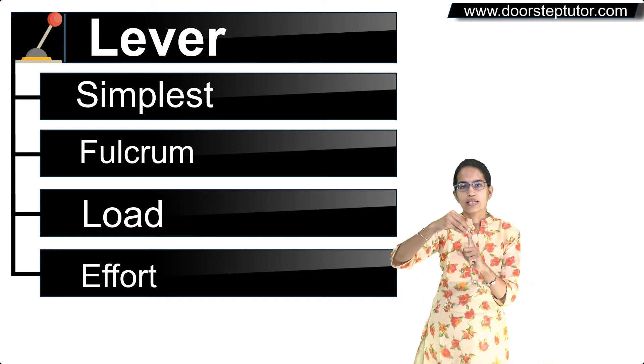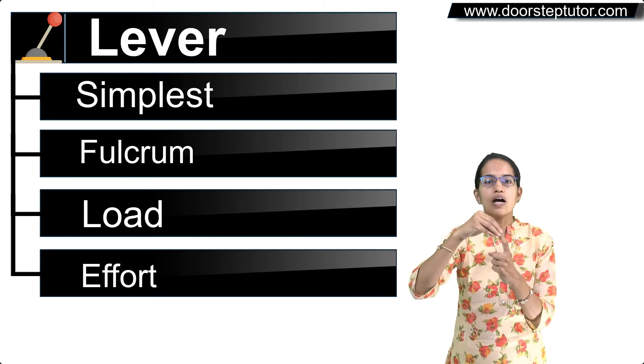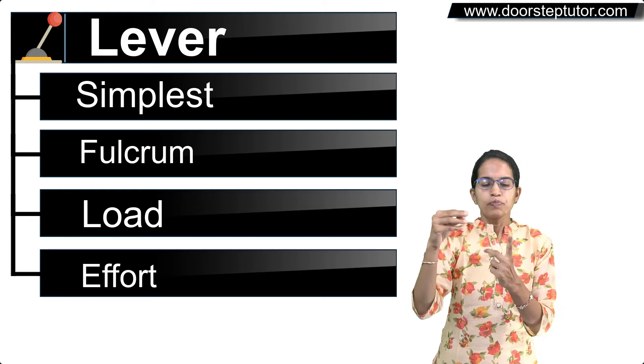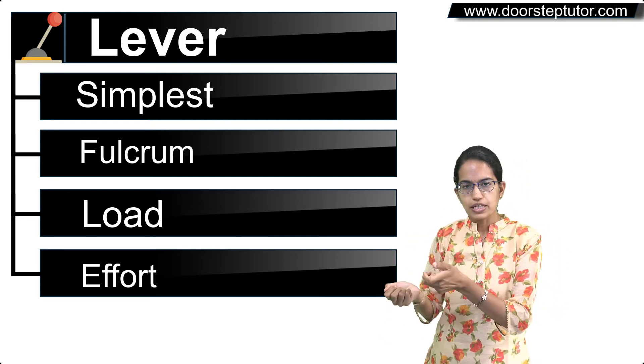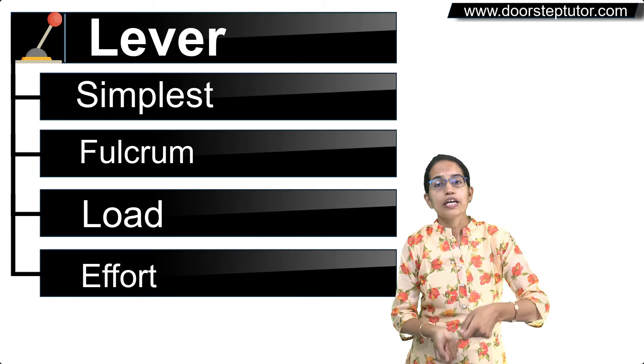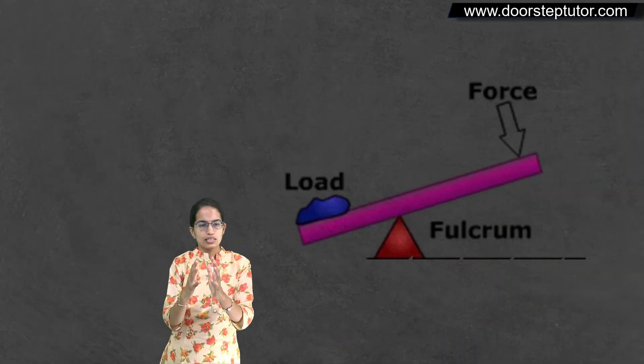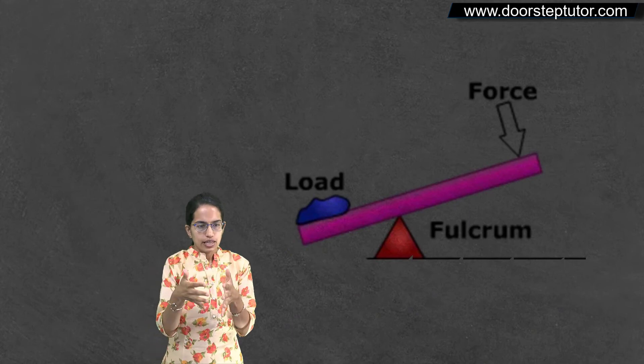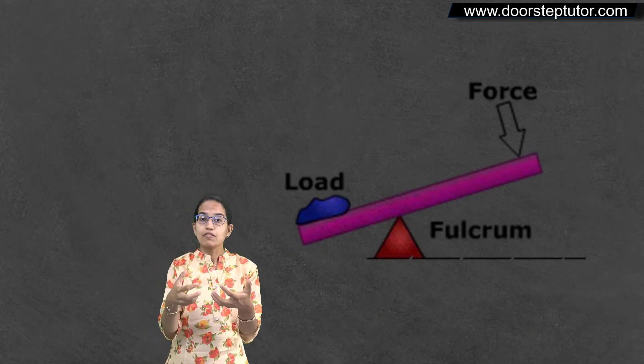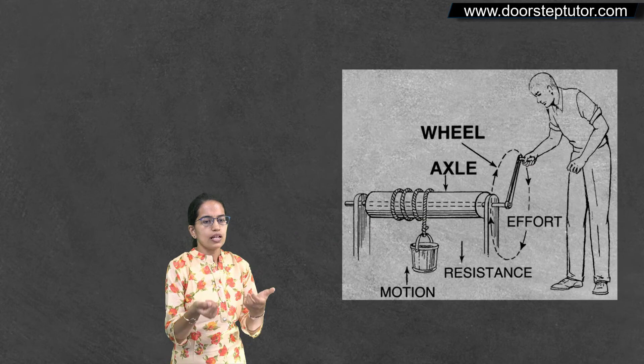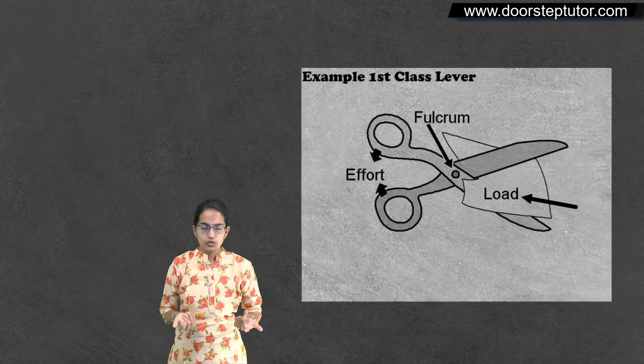Fulcrum is the point where the thing is attached, a kind of immovable point. And then you have load where the weight is and the effort where force is applied. In the case of class 1 lever, the fulcrum is in the between. Wheel and axle or scissor are good examples.